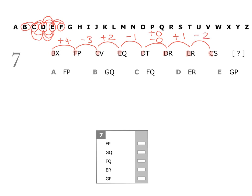Looking at the pattern, we can see that we are alternating between moving on letters and moving back letters, going down to zero: four, three, two, one — then up from zero: zero, one, two. So the next number is three. The last thing we did was move back two letters, so this time we're moving on. Moving on three letters from C gives us the letter F. So our first missing letter in the pair is F.